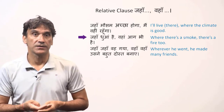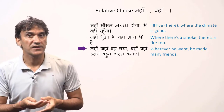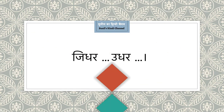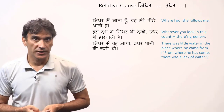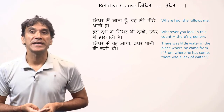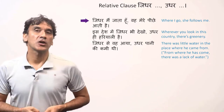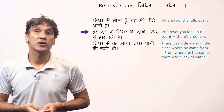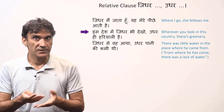Again, the word 'where' is not a question but a relative. The next relative word is jithar. It is similar in meaning to jaha — it also means 'where' or 'whither.' For example: 'Where I go, she follows me,' or 'Wherever you look in this country, there is greenery.'